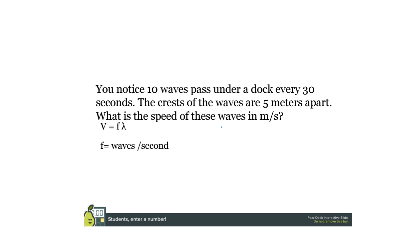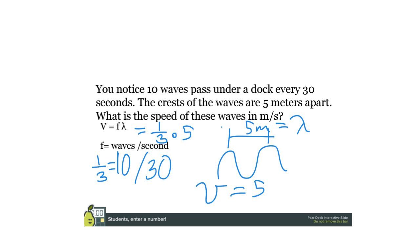So this problem says you notice 10 waves every 30 seconds. So what that means is the frequency, which is waves per second, is one third. It says the crests of the waves are five meters apart, so that means the length of the wave is five meters. So if you're trying to figure out the velocity, it's one third times five, or the velocity is five thirds. Or if you want to divide that out, you could say it's 1.6 or 1.7 meters per second.